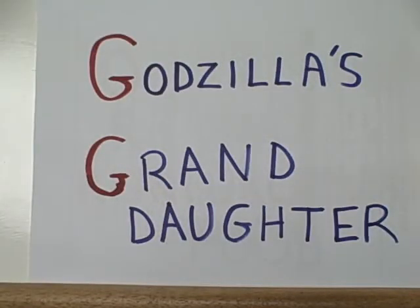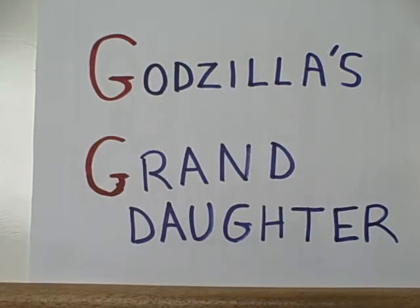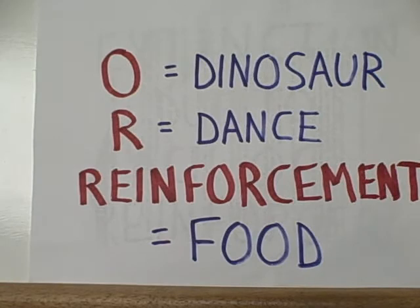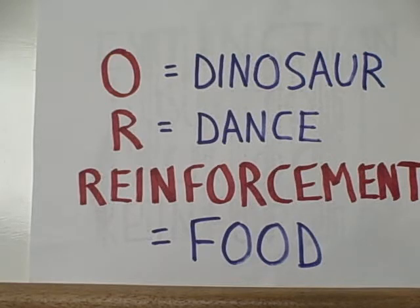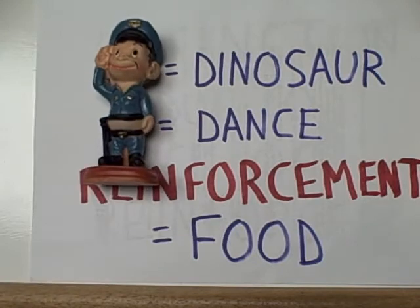Let's take a look at our organism that we're using today. This is Gigi the dinosaur, and she is Godzilla's granddaughter — that's where we get her name. In this particular example of operant conditioning, the organism is the dinosaur, and we're going to try to get her to dance. When she does, we are going to reinforce her behavior by giving her food. After watching the movie Godzilla, I know that the favorite food of this kind of dinosaur is a Japanese policeman.